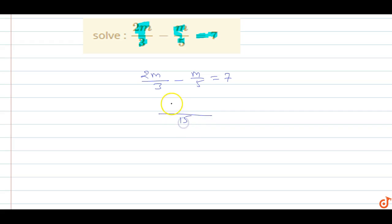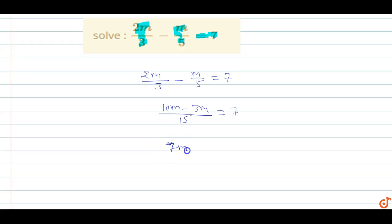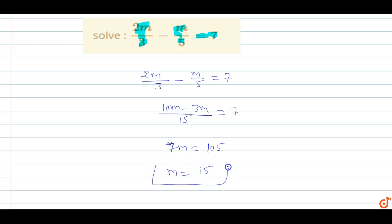We take the LCM of 3 and 5, which is 15. So we get 10m minus 3m equals 7. That gives us 7m equals 15 into 7, which is 105. Therefore, m equals 15.